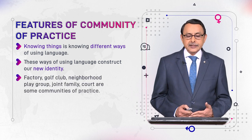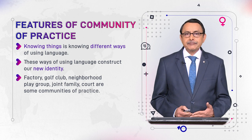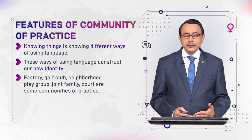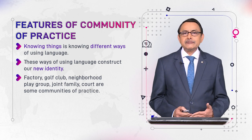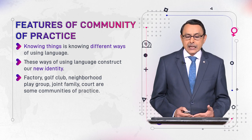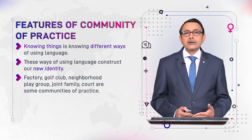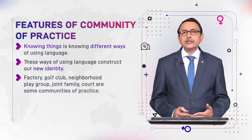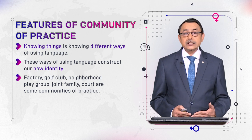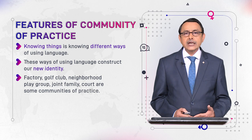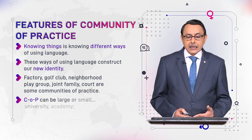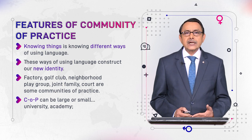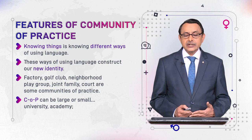Examples of communities of practice include factories, golf clubs, neighborhood play groups, giant families, nuclear families, and courts. These are examples of communities of practice because they have all the features we have talked about. I will now use the abbreviation COP for community of practice.